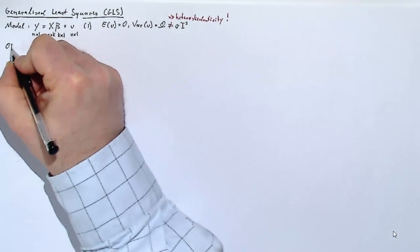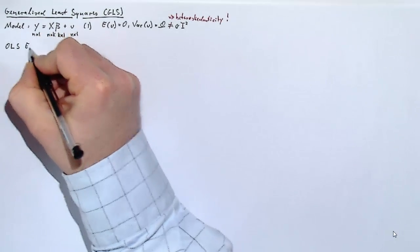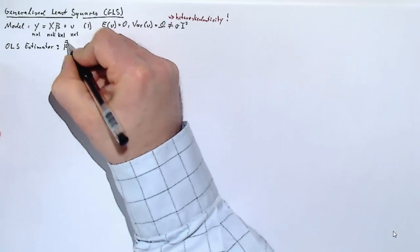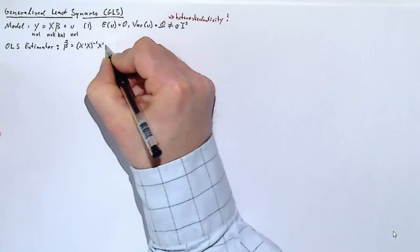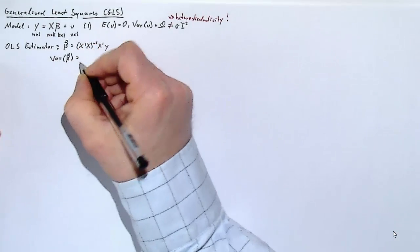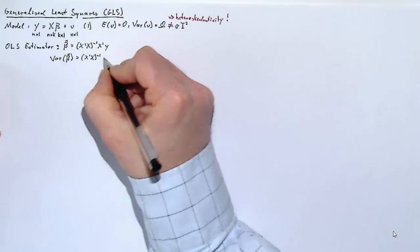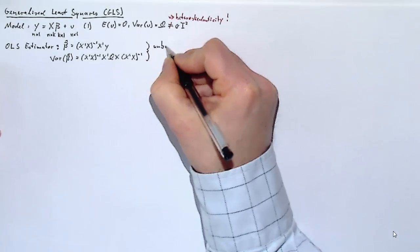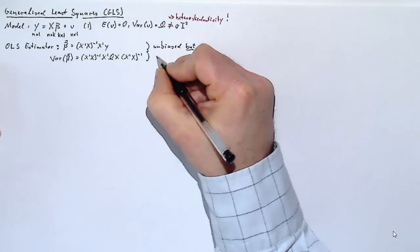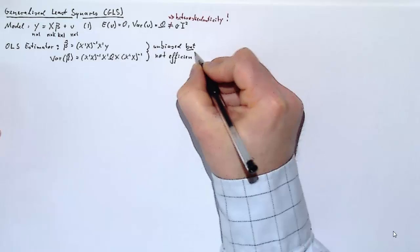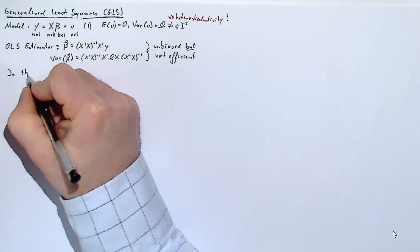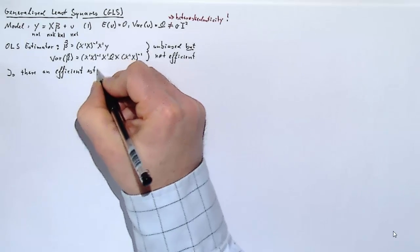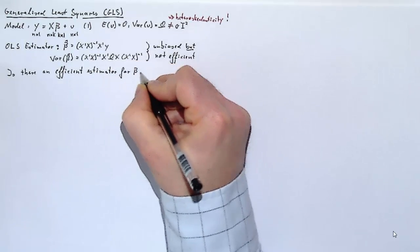Of course, we know that for this situation the OLS estimator can be written like this: beta hat equals x prime x inverse x prime y. So this is the formula you should know in your sleep. And you will also know that the variance, if we have heteroscedasticity for this beta hat, is x prime x inverse, x prime omega x, x prime x inverse. And we know that the beta hat is unbiased, but it is not efficient. So it's not a blue estimator. It doesn't have the smallest possible variance.